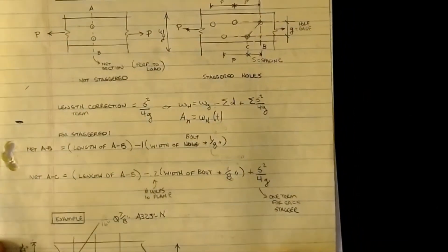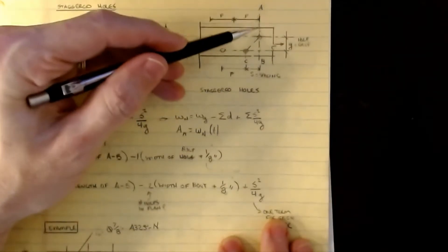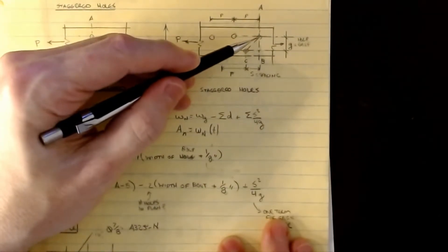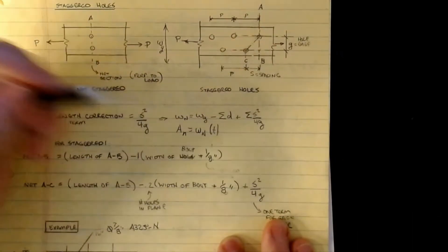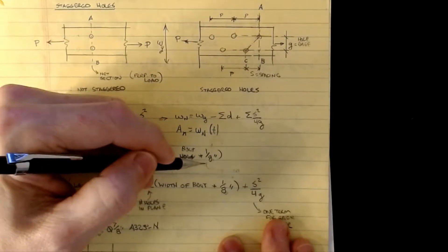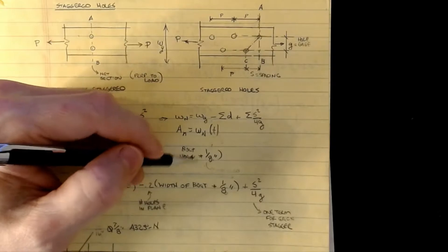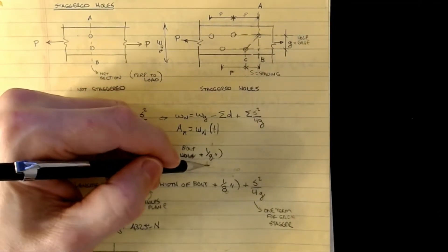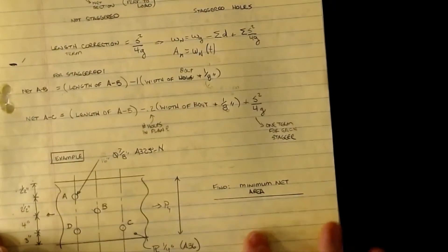If I look at plane A-B, I would take the length of A-B without the hole. That would be my WG parameter, and then subtract off one hole, which would be the width of the bolt plus an eighth of an inch. This eighth inch assumes the standard oversize and that the hole was punched. If this was a drilled hole or slotted hole, you would have to correct that value. We're going to assume punched holes for all our exercises.